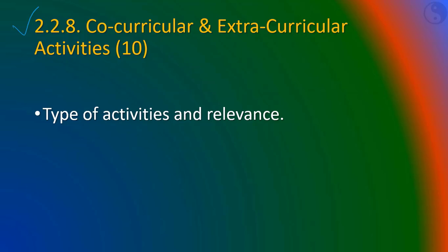Sub-criterion 2.2.8 covers co-curricular and extracurricular activities. The institution may specify and quantify activities such as NCC, NSS, and participation in various state and national level missions. The department and institute can develop appropriate rubrics for assessment of co-curricular and extracurricular activities and quantify them. If so, the activities can be qualified as a course and included for computation of PO attainment. These are the sub-criteria under Criterion 2.2 for teaching learning processes.